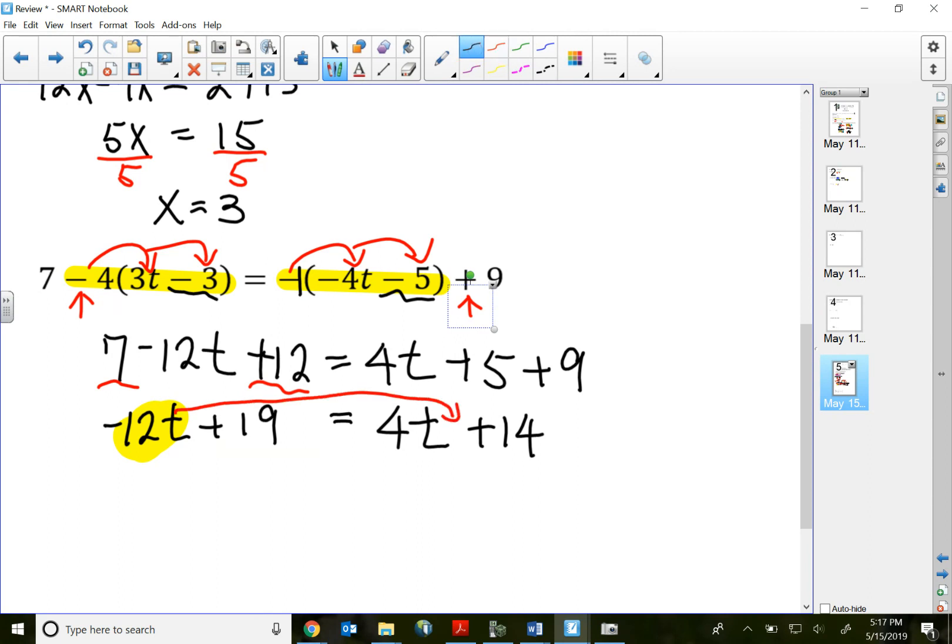Therefore, I can just divide by the coefficient that is positive. Easier to divide by positive coefficient, lesser chance to make mistakes. The negative 12t comes over to the right, becomes positive 12t. Combined with the positive 4t, that should get 16t.